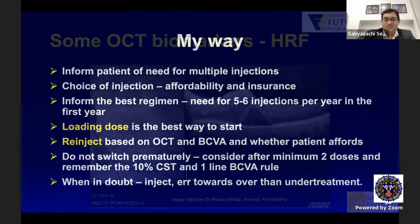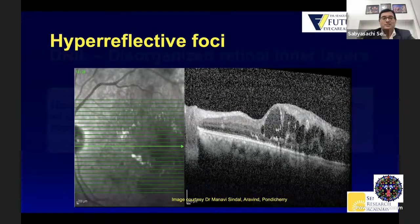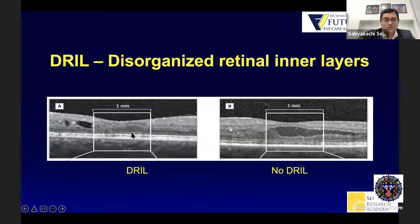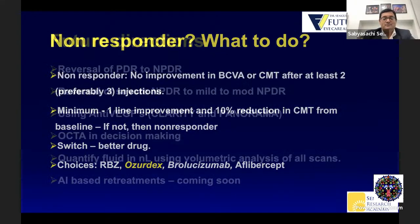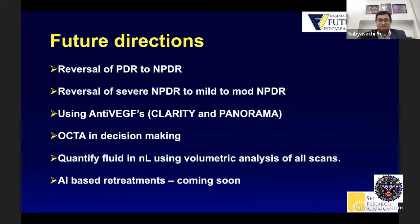We don't have enough time to cover all the biomarkers, but briefly: hyper-reflective foci on OCT tell you there is more inflammation and maybe dexamethasone would help. Disorganized retinal inner layers — where you can't differentiate one layer from the other — are poor prognostic indicators and most of those patients should not be injected repeatedly. Future directions include reversal of PDR to NPDR and severe NPDR to mild NPDR using anti-VEGFs; OCT angiography for decision making; quantification of fluid in nanoliters using volumetric analysis of OCT scans; and artificial intelligence-based retreatment protocols. Practical take-home message for DME: start with loading doses, then switch to PRN; counsel patients at baseline; use OCT-based re-injection criteria; identify non-responders and switch or look at OCT parameters; communication is crucial — take patients into confidence.